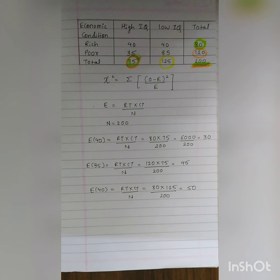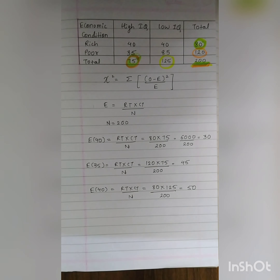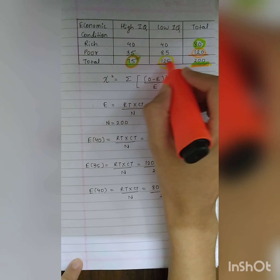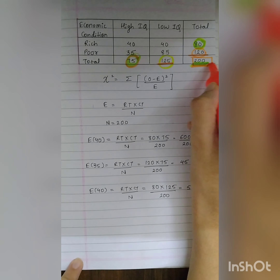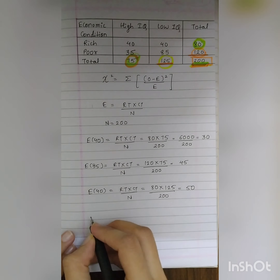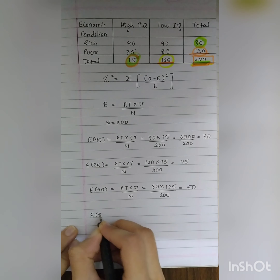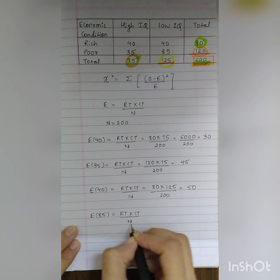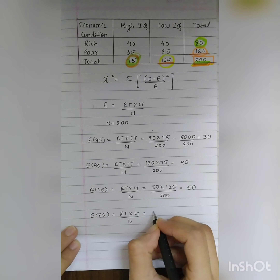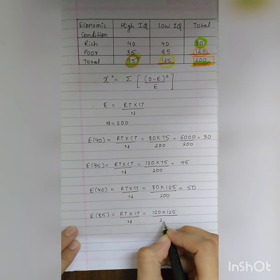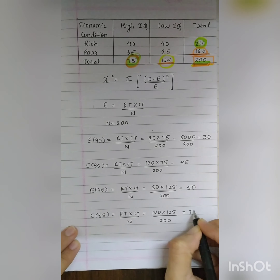The expected frequency for the observed value 85 (poor, low IQ): row total is 120 and column total is 125, grand total is 200. So the expected frequency equals RT times CT divided by N, which is 120 times 125 divided by 200, equal to 75.